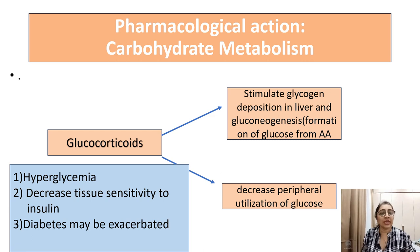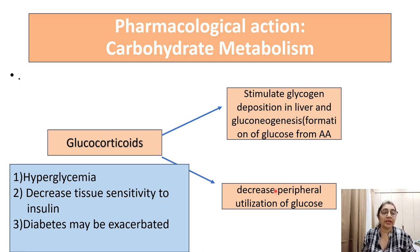Pharmacological action on carbohydrate metabolism: corticosteroids stimulate glycogen deposition in the liver and gluconeogenesis — the formation of glucose from other sources. They increase glucose deposition in the liver and decrease peripheral utilization of glucose. The result is hyperglycemia, decreased tissue sensitivity to insulin, and possible exacerbation of diabetes.